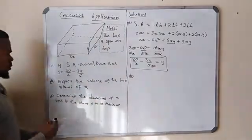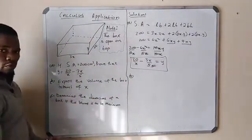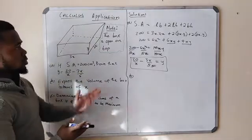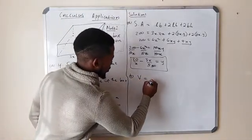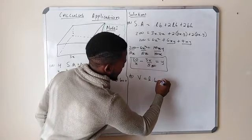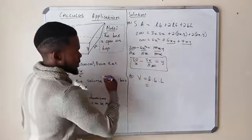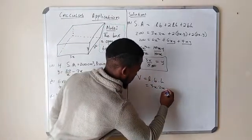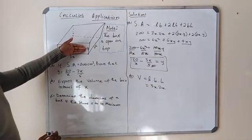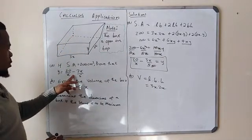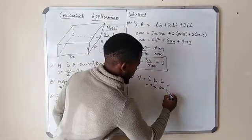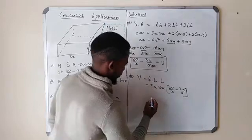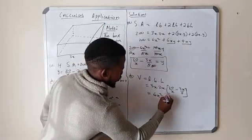The second question asks us to express the volume of the box in terms of x. The formula for the volume of a rectangular prism is V = length × breadth × height. In this case, length = 3x, breadth = 2x, and height = y, but we have found that y = 20/x − 3x/5. So the height is 20/x − 3x/5.